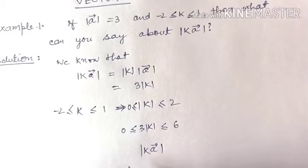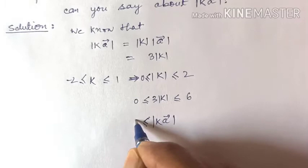Therefore, modulus of ka vector is more than or equal to 0 and less than or equal to 6.